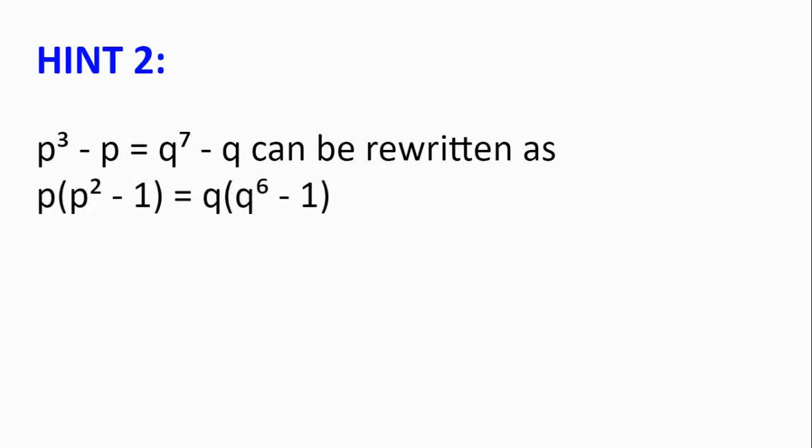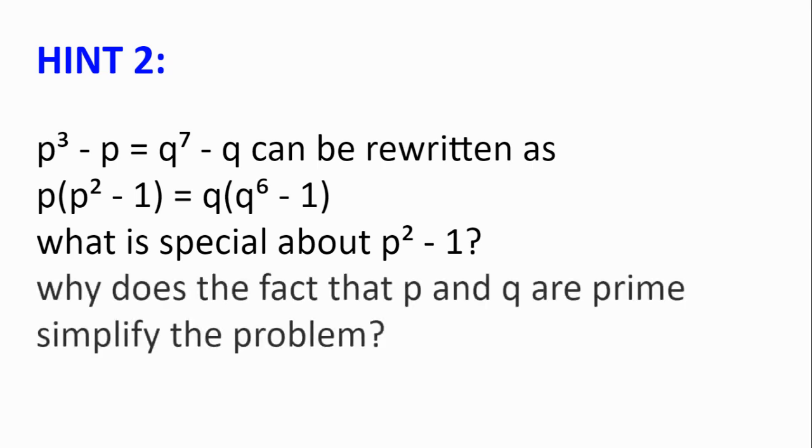Hint number two. p³ - p = q⁷ - q can be rewritten or factorized as p(p² - 1) = q(q⁶ - 1). What's special about p² - 1? And another question: Why does the fact that p and q are prime simplify the problem? What are the common factors of p and q?